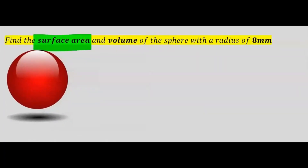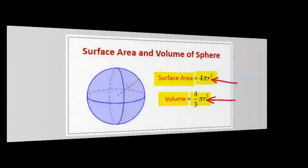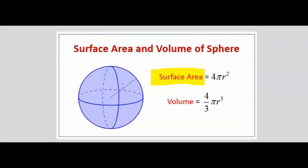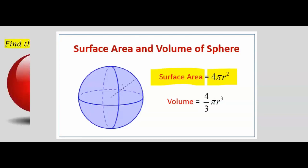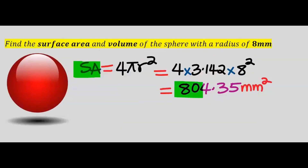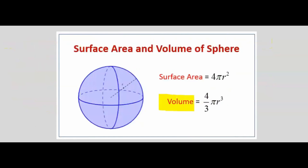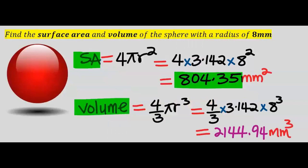Let's find the surface area and volume of a sphere with radius 8 millimeters. For the surface area we use 4 multiplied by pi multiplied by r squared. The surface area of the sphere is 804.35 millimeters squared. Next, for the volume we use 4 over 3 multiplied by pi multiplied by r to the power of 3. The volume of the sphere is 2144.94 millimeters cubed.